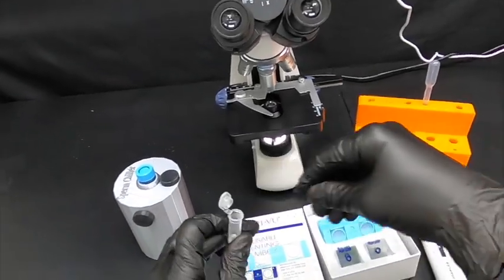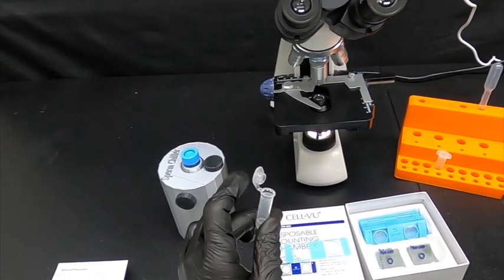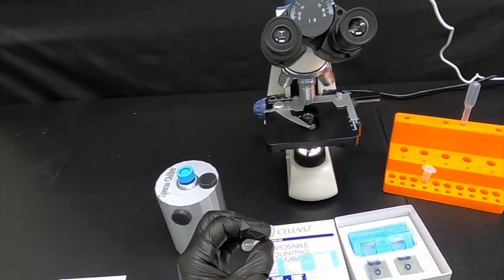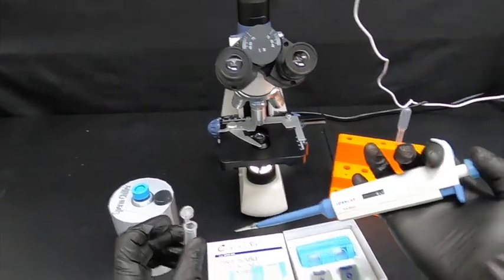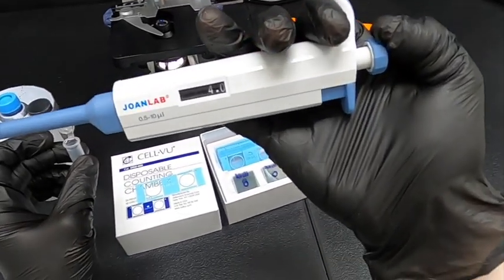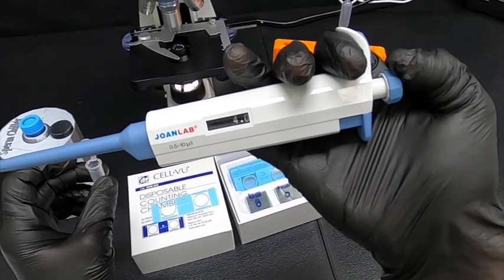So as indicated in the instructions, we'll first mix it by gentle inversion or by brief vortexing and set our mechanical pipette to four microliters.